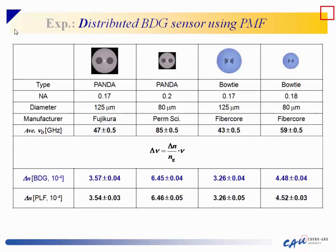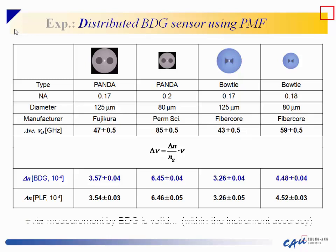We compared the lateral force method results with those from BDG-based measurement. The two results match very well within measurement accuracy. Therefore, delta N measurement by BDG is valid within the instrument accuracy. The BDG measurement accuracy is governed by the OSA accuracy, which is around 1 GHz.